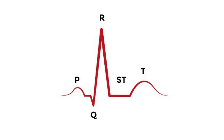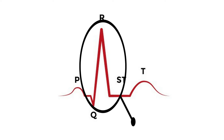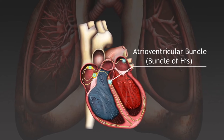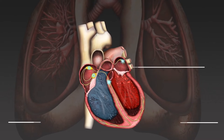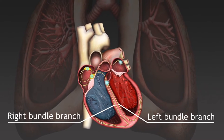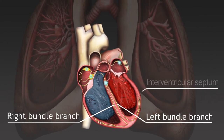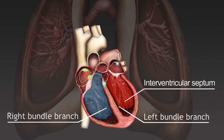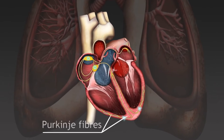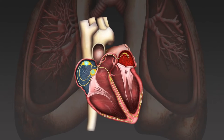Second is the QRS complex. The next area you see is a big spike. This spike is called the QRS complex. The bundle of His, bundle branches, and Purkinje fibers are responsible for this. The QRS complex represents ventricular depolarization — the contractions of the ventricles.